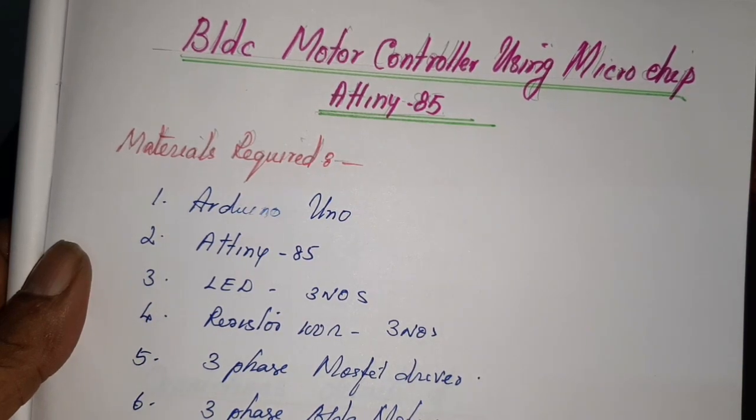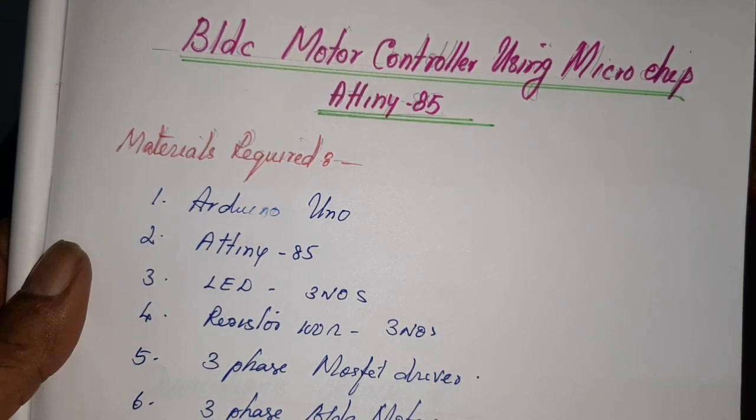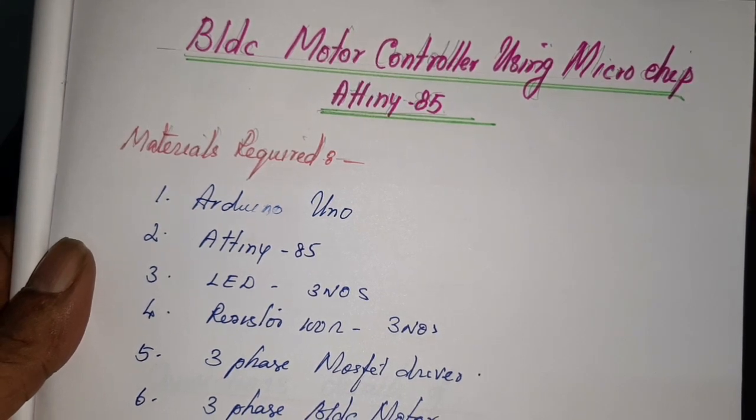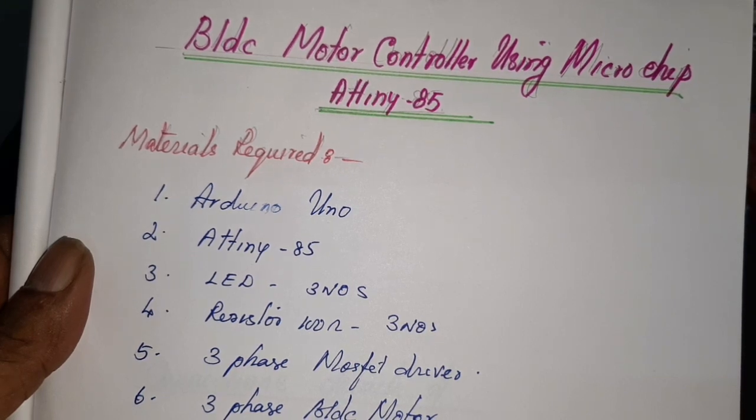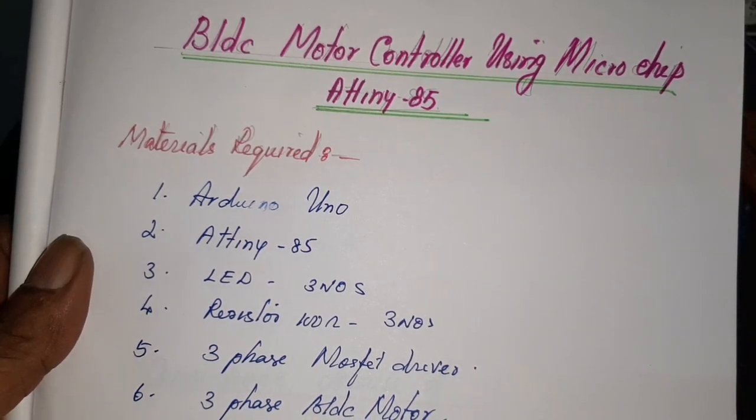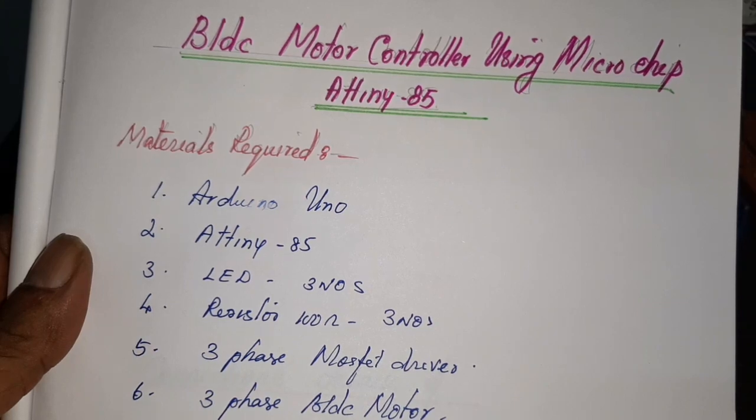In order to make a BLDC controller, the required materials are Arduino Uno, ATtiny 85, LED 3 numbers, resistor 100 ohms, 3 phase MOSFET driver, and 3 phase BLDC motor. These are the materials required to make the project.